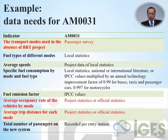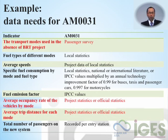For the total number of passengers on the new system, data must be recorded per entry station. For MRT or PRT projects, they need to exactly count the amount of emission reduction, so where passengers enter and exit must be precisely measured to determine total passenger numbers.